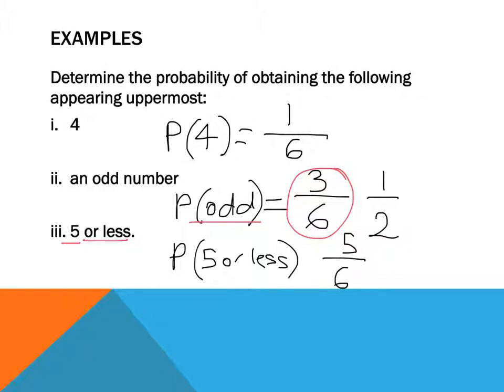And that's it. That's theoretical probability. What you have to understand is possible outcomes is your sample space, and favourable outcomes is how many times the thing that you're looking at does occur in your trials.